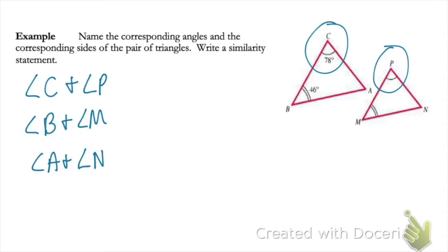For our sides, we're just going to kind of look at the angles as well. So side CB is going to be corresponding to side PM because they have corresponding angles. And then finally we need to write a similarity statement.